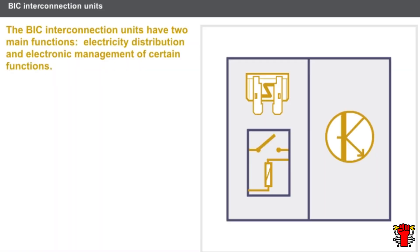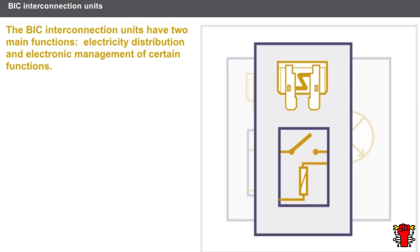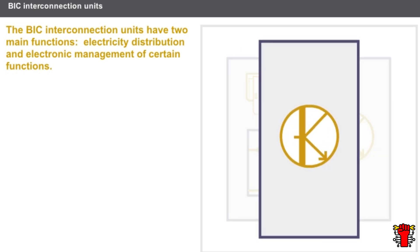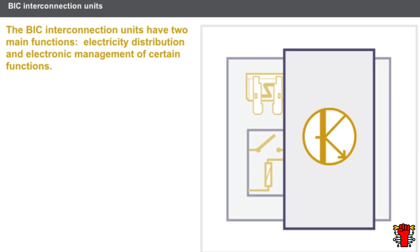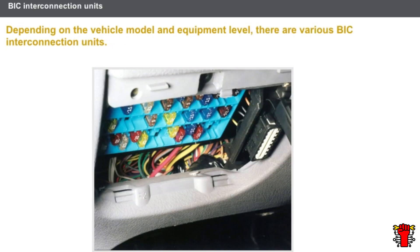The BIC interconnection units have two main functions: electricity distribution and electronic management of certain functions. Depending on the vehicle model and equipment level, there are various BIC interconnection units.